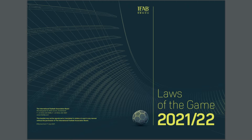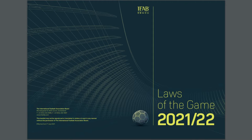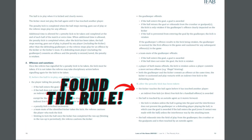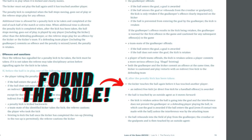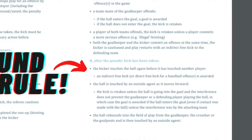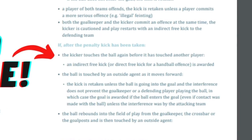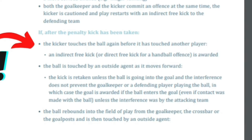I opened the International Football Association rule book, and under Law 14 it is stated that after the penalty kick has been taken, if the kicker — that is the penalty taker — touches the ball again before it has touched another player, an indirect free kick or a direct free kick for a handball offense is awarded.